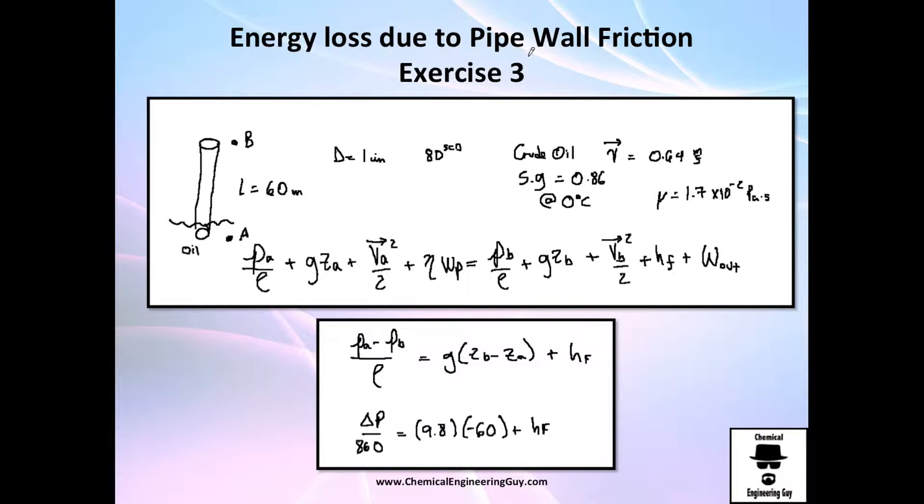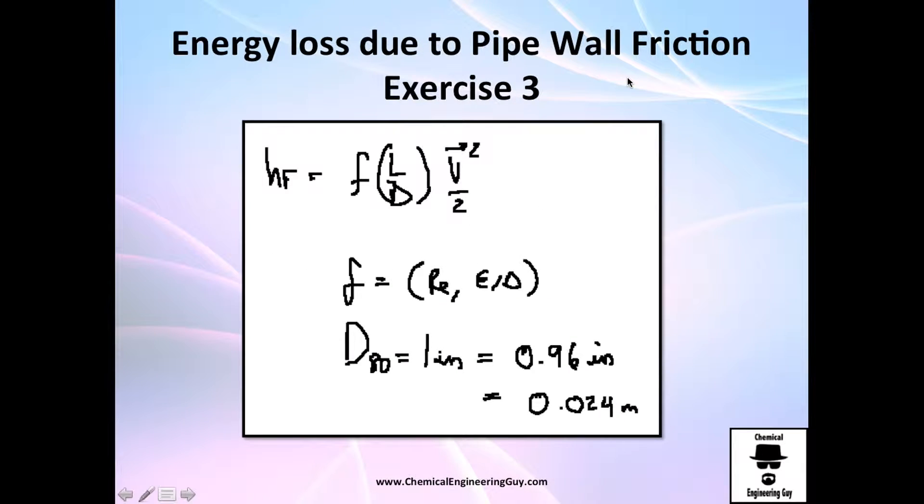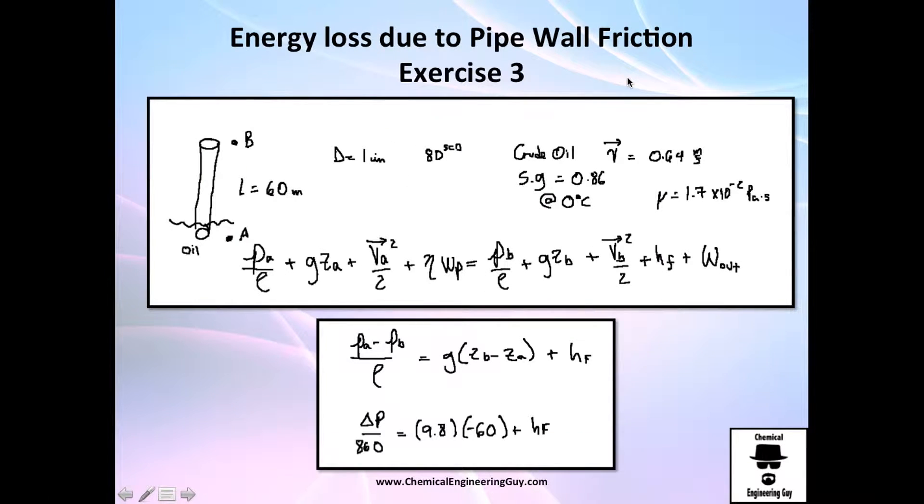In the last session we did two exercises. Exercise number one was to calculate the friction loss in a system, and exercise number two was to calculate the pressure drop given the energy loss. In this exercise we're going to do something pretty similar, but we're going to find the friction factor ourselves. In the last one we didn't need to calculate it because it was given to us.